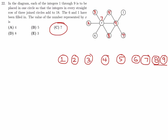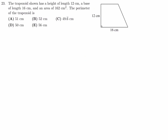The trapezoid shown has a height of length 12, a base of length 16, and an area of 162. What is the perimeter? First, I'll drop a perpendicular from the top-left corner down to the base, making this essentially a rectangle and a triangle. The height is 12, the full base is 16. I'll label the triangle's base x and the rectangle's base 16 minus x. The area equals the rectangle's area, 12 times (16 minus x), plus the triangle's area, one-half times x times 12.